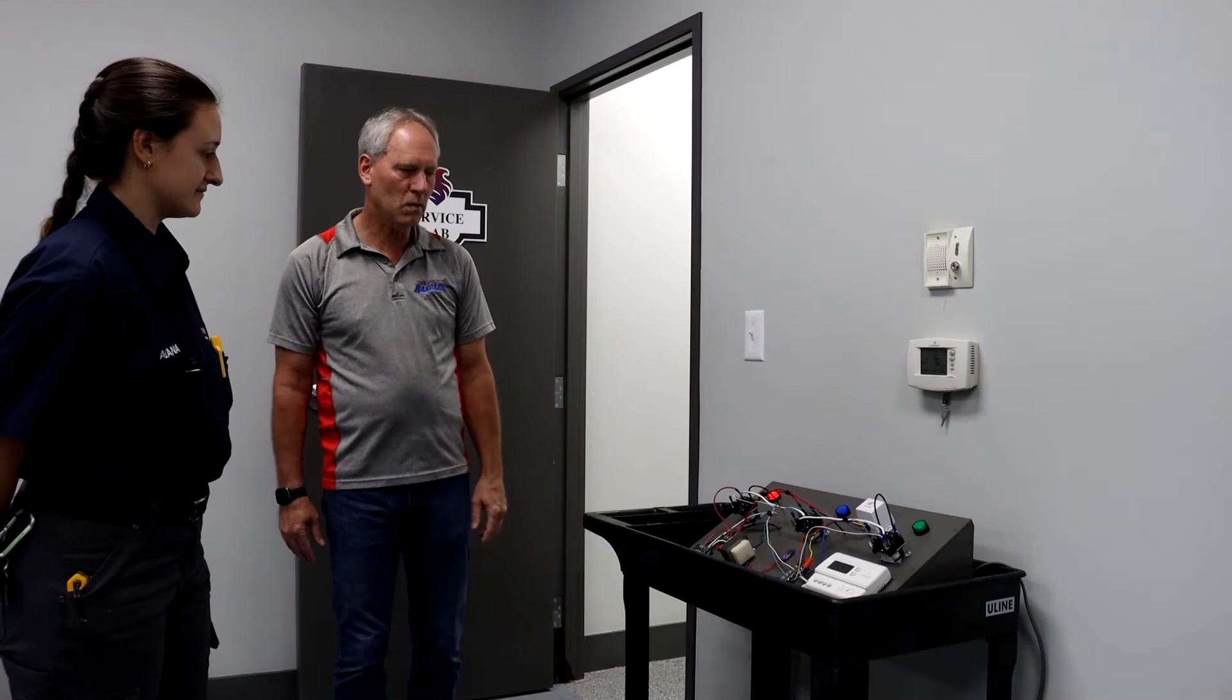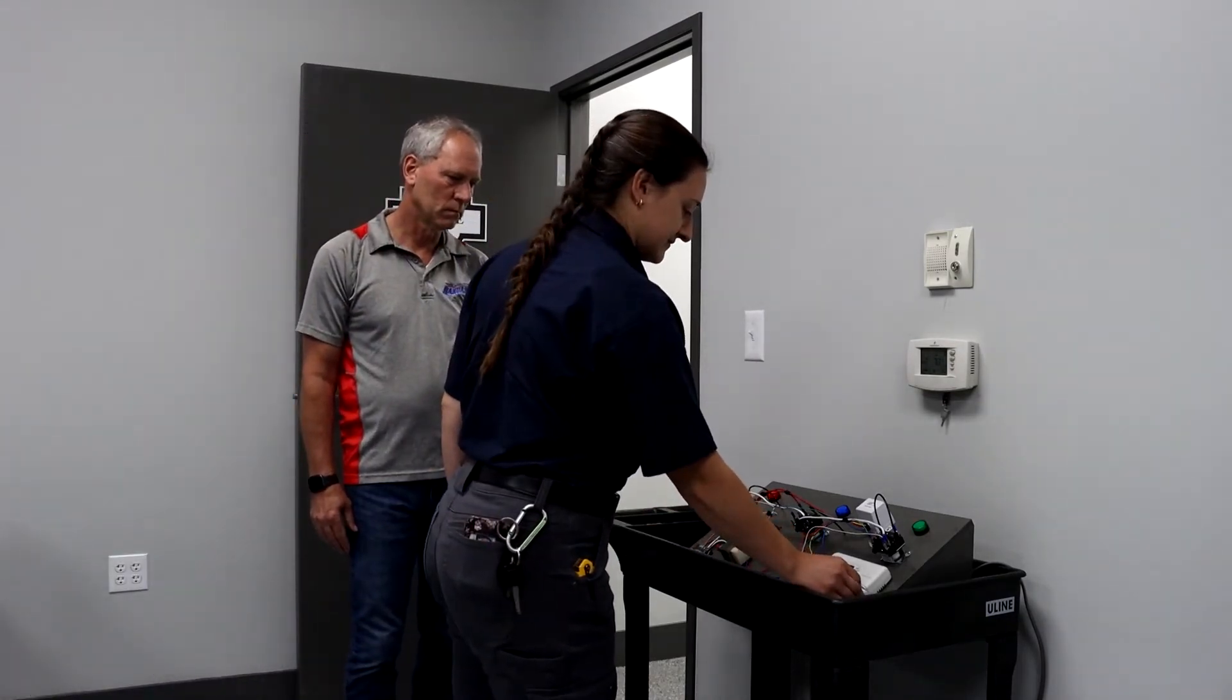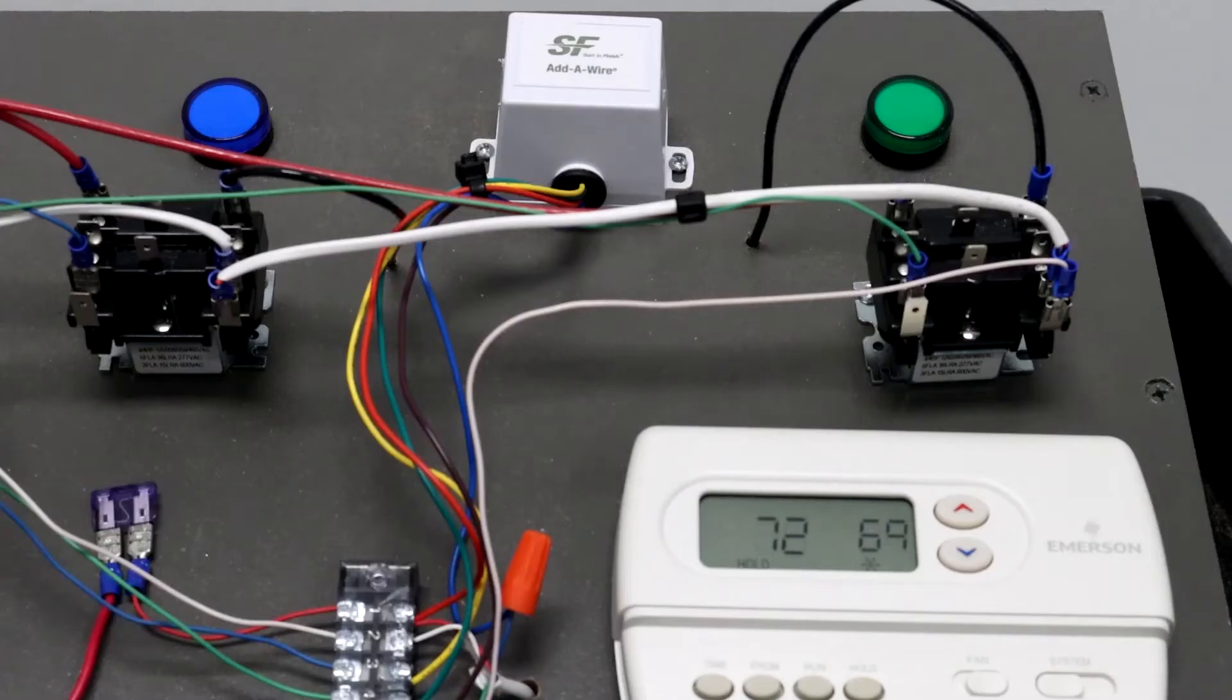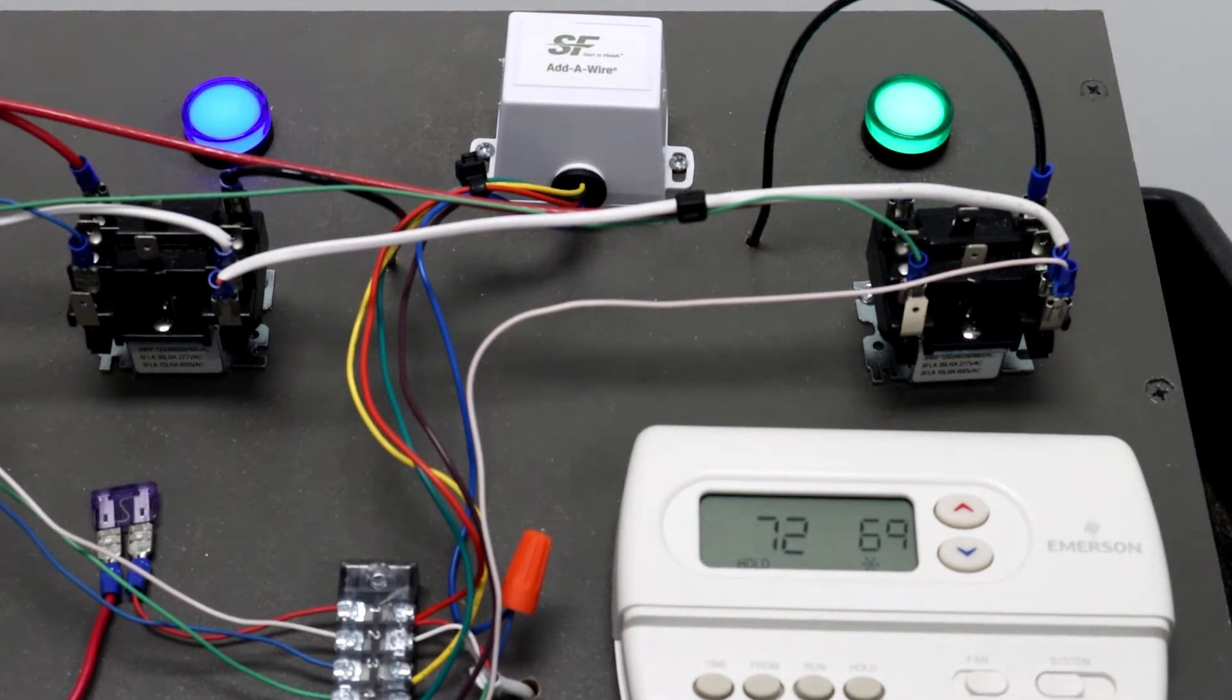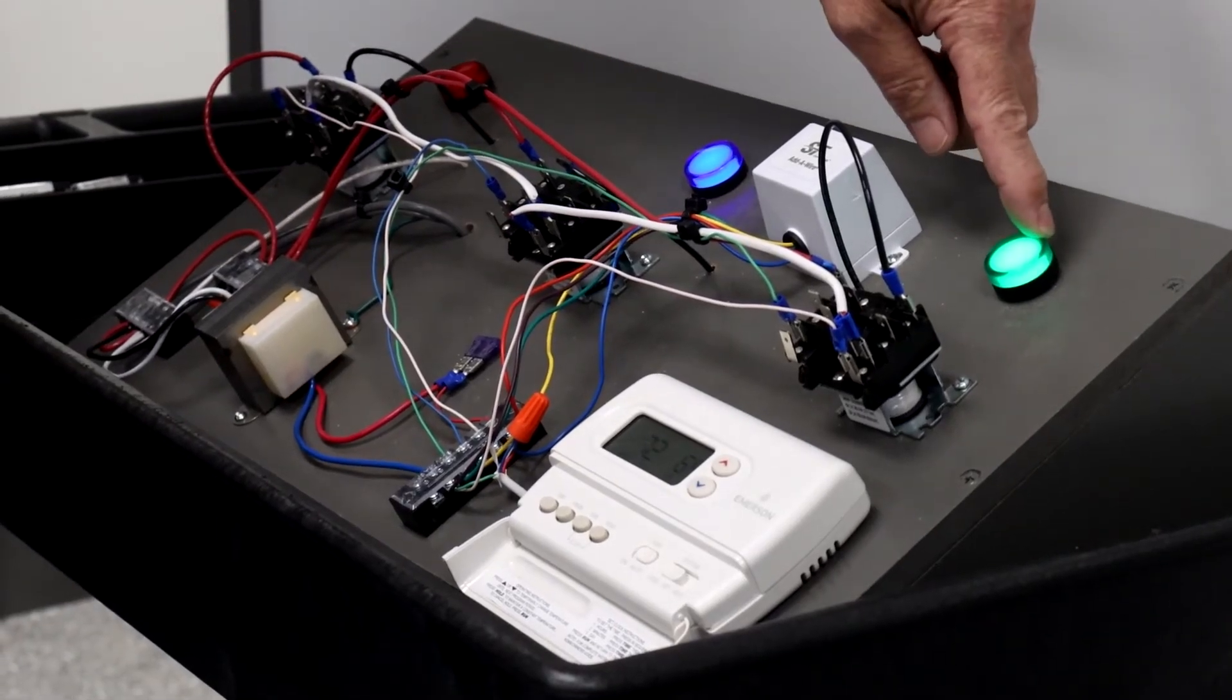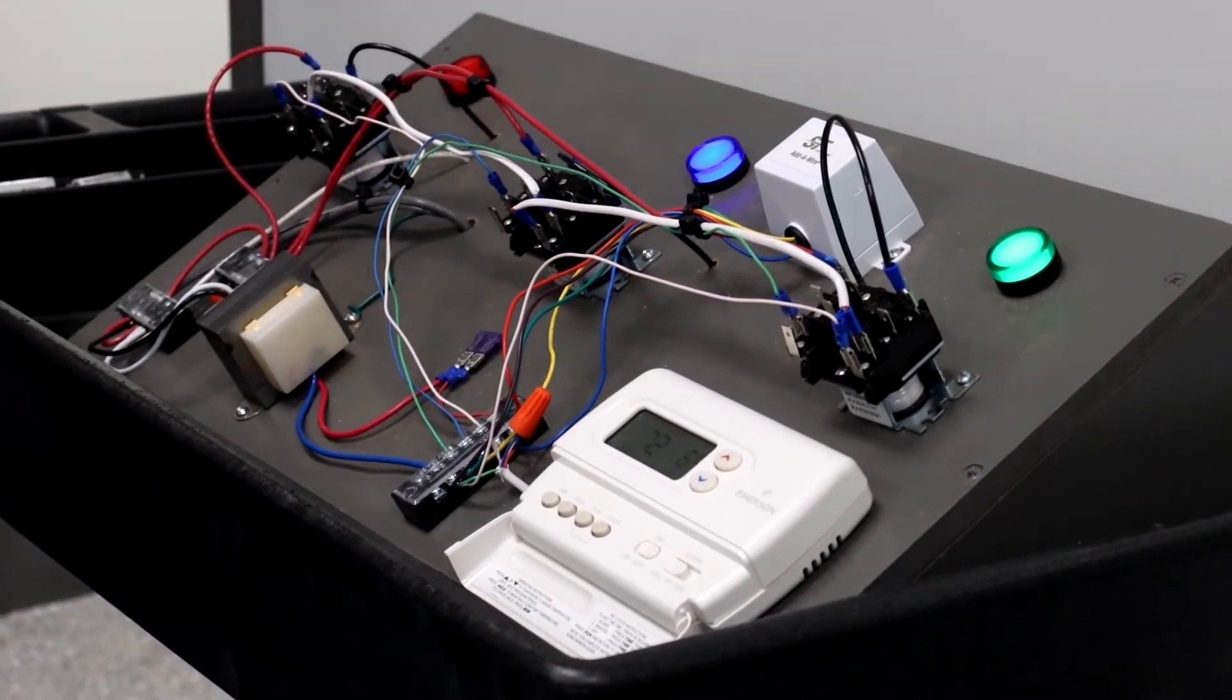Now let's switch it over to cool. At this point the thermostat's calling for cooling. It sends power to the blower relay and it also sends power to the contactor coil outside. The green light indicates the blower. The blue light indicates the relay for the contactor coil outside.